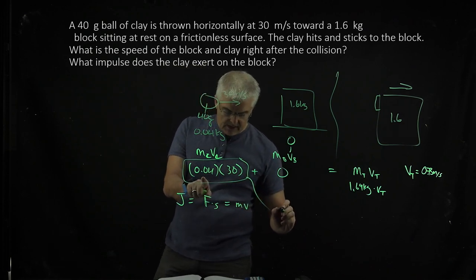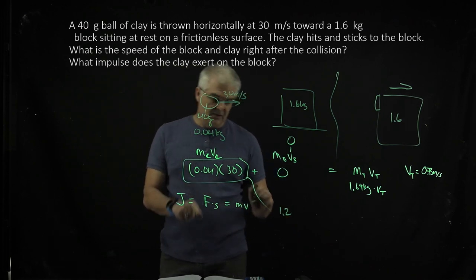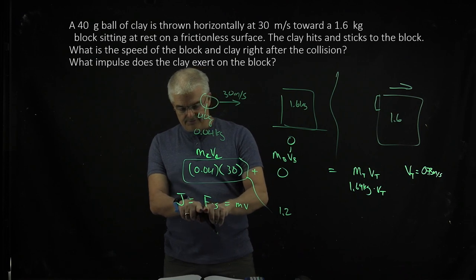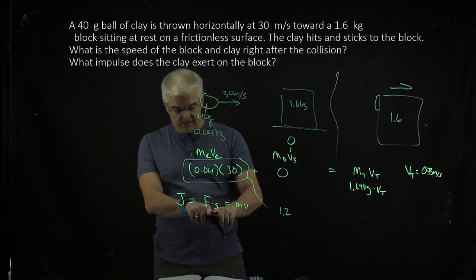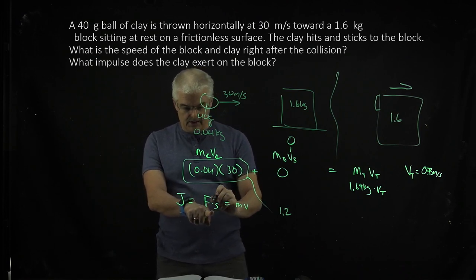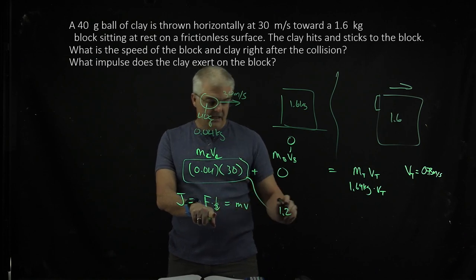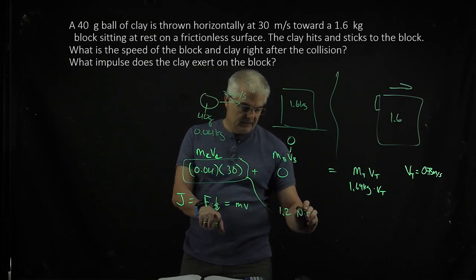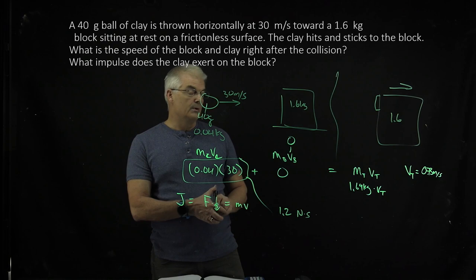So when you multiply these two numbers, I got 1.2. And the units on that, because it's in forces in Newtons, and seconds is in, I should say F times T, and that's in seconds. That will be Newton seconds. So that's how you do a question here.